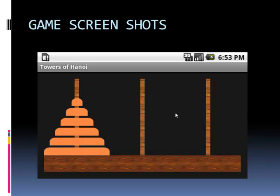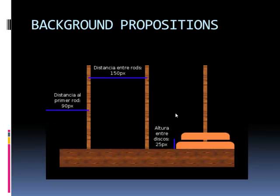This game screenshot gives the user an idea about what the output looks like. Background propositions: this picture is dynamically invoked in the program. The distance between the two rods is 150 pixels, the size of the larger disk on screen is 25 pixels, and the distance of the primary rod is 90 pixels.